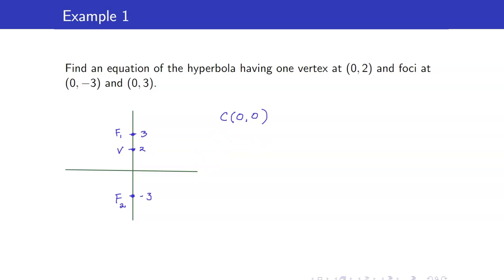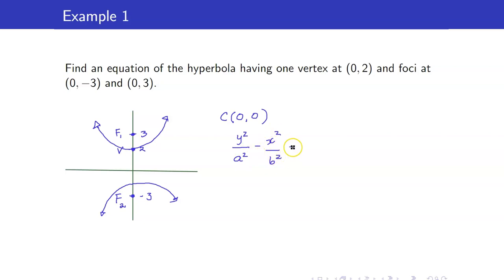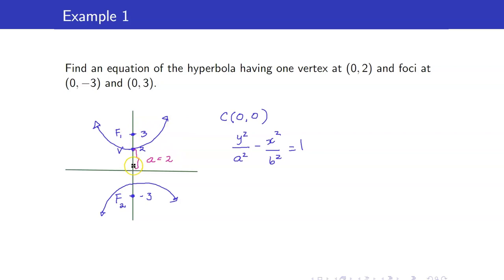Our hyperbola is opening upwards and downwards. Therefore, the equation of our hyperbola starts with y since this is a vertical hyperbola. So far, we have y squared over a squared minus x squared over b squared is equal to 1. All we have to do is find the values of a and b. We can get the values of a and c from our graph. a is the distance of your vertex from your center, so our a is 2. The foci are both c units away from the center, and this is equal to 3.